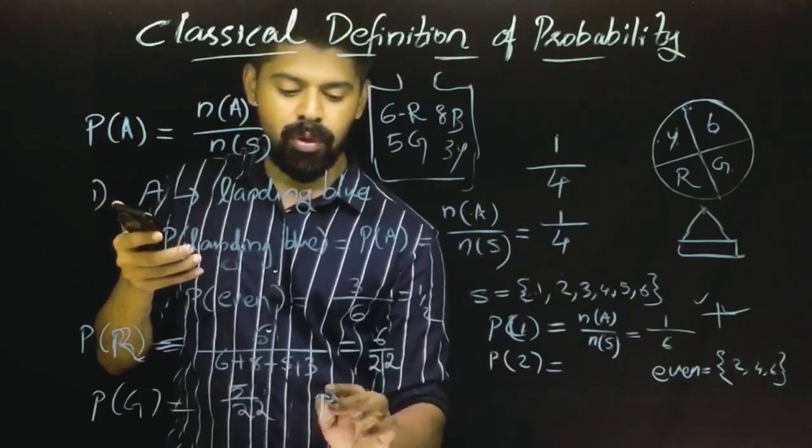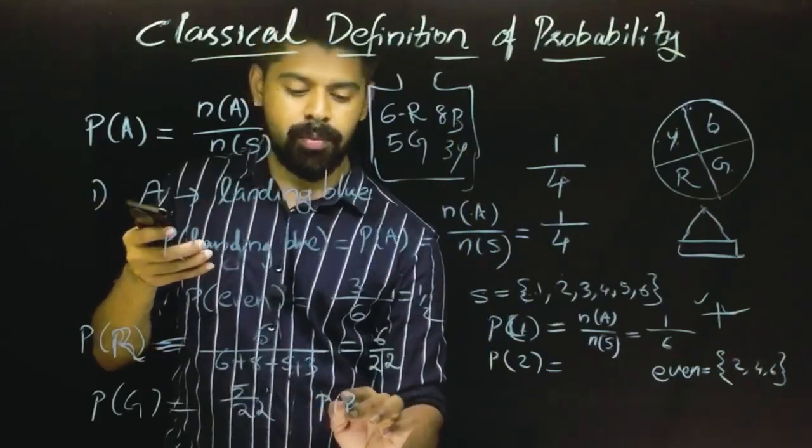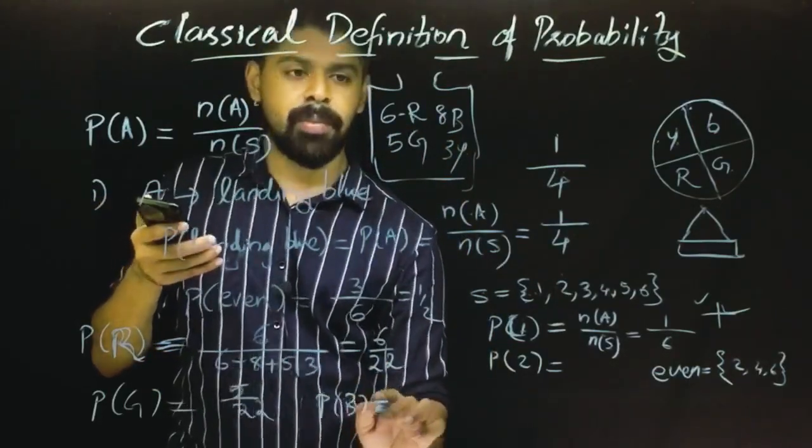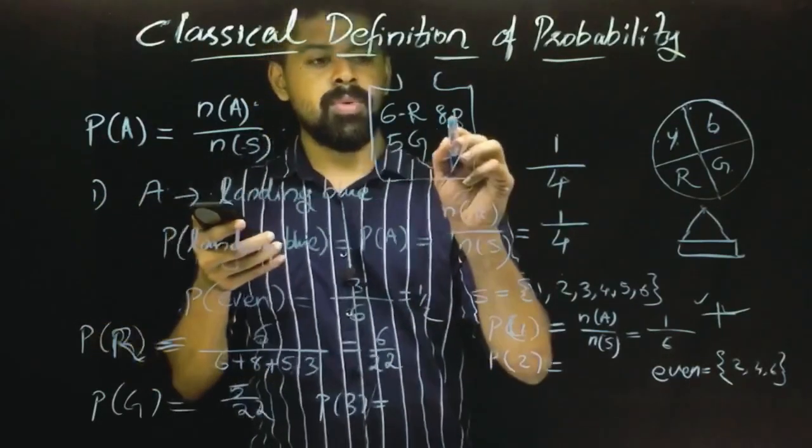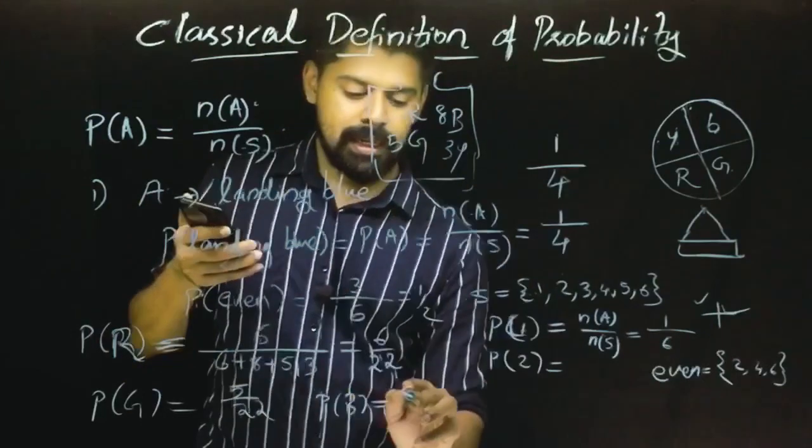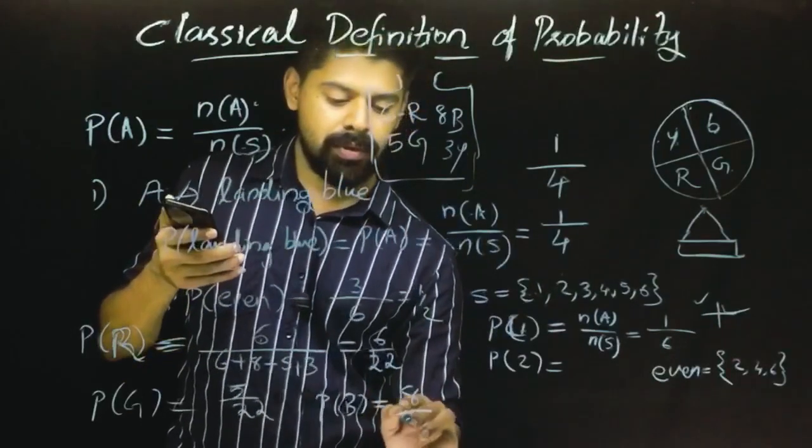The probability of blue is 8 by 22, which simplifies to 4 by 11.